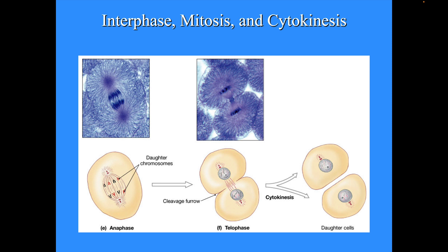Instead of having a double-stranded chromosome, there would be a single-stranded chromosome in each daughter cell. That is why the S phase of interphase is so important — that DNA needs to duplicate before cell division can occur again.